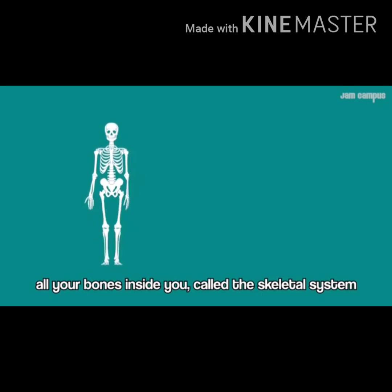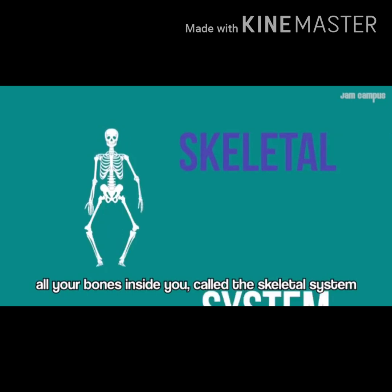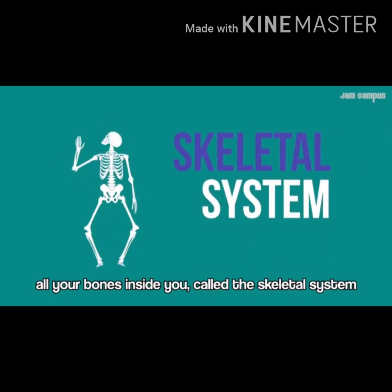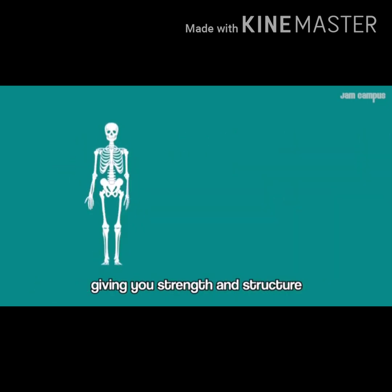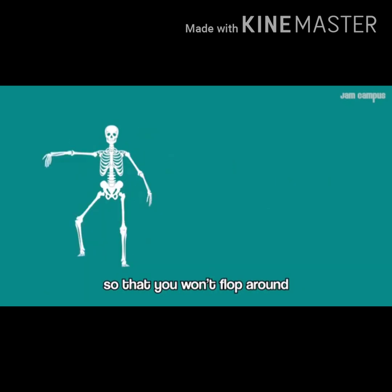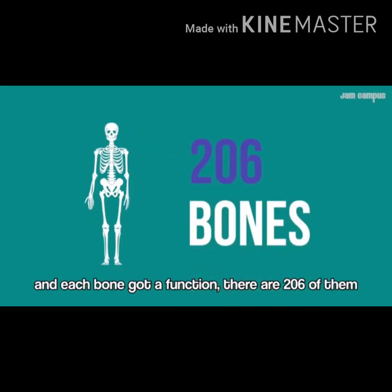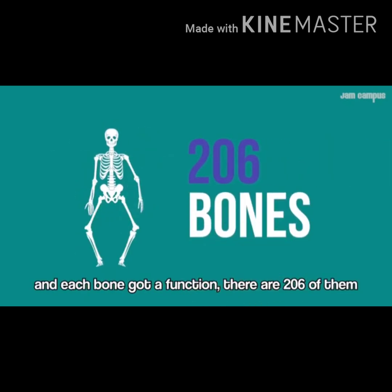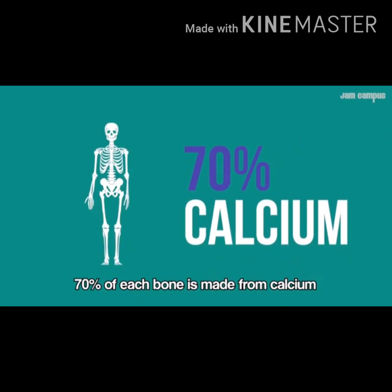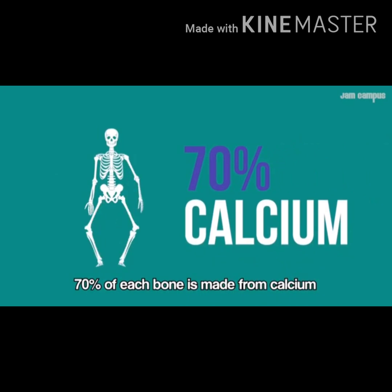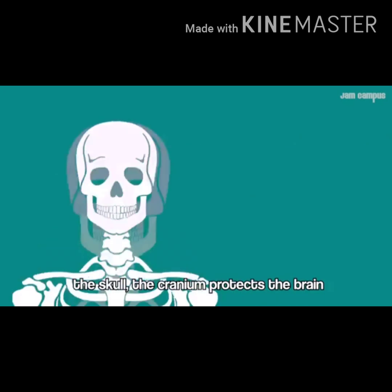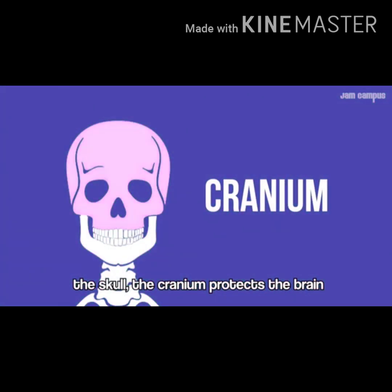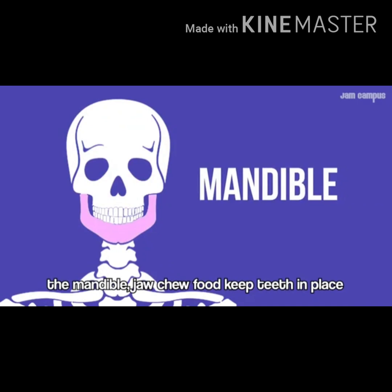All your bones inside you make up the skeletal system, giving you strength and structure so that you won't flop around. Each bone has a function — all 206 of them, and 70% of each bone is made from calcium. The skull: the cranium protects the brain. The mouth bone, the jaw, keeps teeth in place.